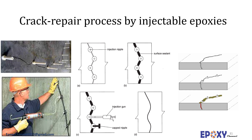Afterwards, epoxy sealant is spread over the surface of the crack and the nipples, and allowed to cure for approximately one hour. The primary aim of applying the epoxy sealant is to fix the injection nipples to the surface of the crack and to prevent liquid epoxy binder from oozing out when injected. In the next step, a double-acting hydraulically driven piston is employed to inject the epoxy resin binder into the crack. If the crack is vertical, injection should start from the lowest nozzle and continue upward. After each complete injection, the nipple is capped to prevent resin runout. This process is repeated until the entire crack is filled. The system is then left to cure for approximately 24 hours, after which nipples are cut off, providing a smooth, even surface.